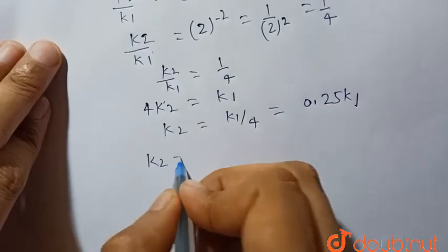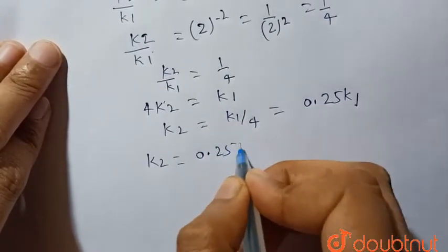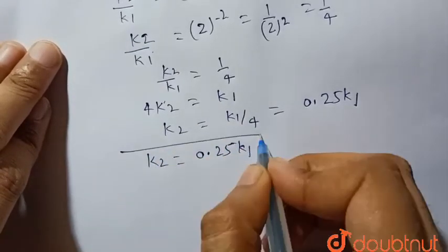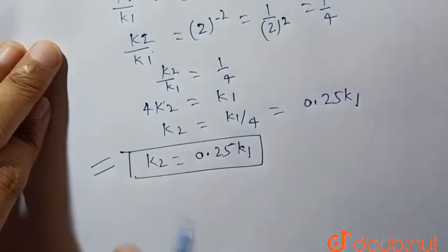Hence k2 is equal to 0.25k1. This is the required relation. This is our final answer.